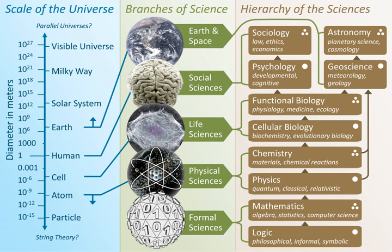Natural sciences — the study of natural phenomena including cosmological, geological, chemical, and biological factors of the universe. Social sciences — the study of human behavior and societies. Natural and social sciences are empirical sciences, meaning that the knowledge must be based on observable phenomena and must be capable of being verified by other researchers working under the same conditions.